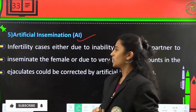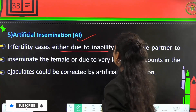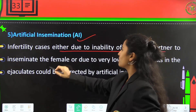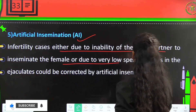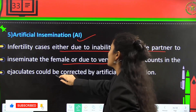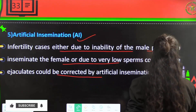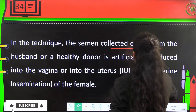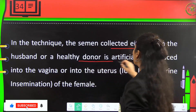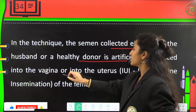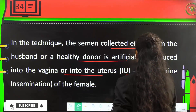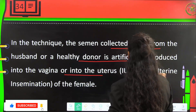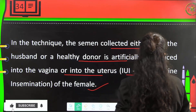Artificial insemination (AI): in cases where the male is unable to inseminate or has very low sperm counts in ejaculation, artificial insemination can help. The semen collected from the husband or a healthy donor is artificially introduced into the vagina or uterus — called IUI, intra-uterine insemination — of the female.